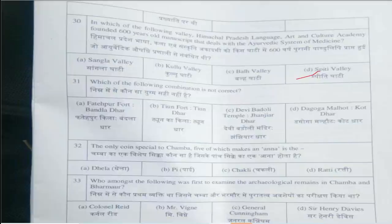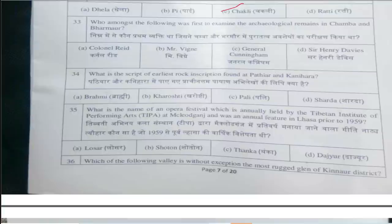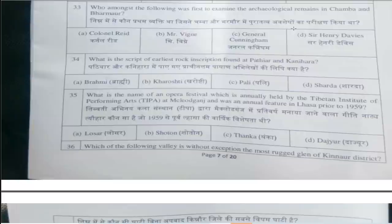Thirty-first question is: Which of the following combination is not correct? The answer is option B. Thirty-second question: The only coin special to Chamba, five of which makes an ana? The answer is option C, Chakli. Thirty-third question is: Who among the following was first to examine the archaeological remains in Chamba and Bharmon? The answer is option C, General Cunningham.